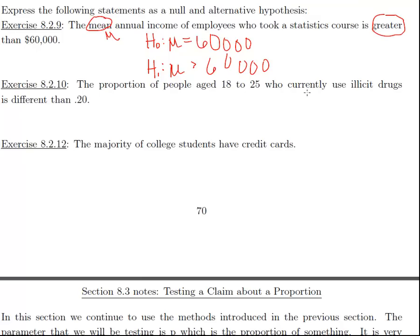Exercise 8.2.10: The proportion of people aged 18 to 25 who use illicit drugs is different than 0.20. So my keywords here are proportion. That means I'm going to use the letter P in my null and alternative. And then also, different is another keyword. So my null hypothesis is that P is equal to 0.20. And then my alternative is P is not equal to 0.20, because I have the word different in there.